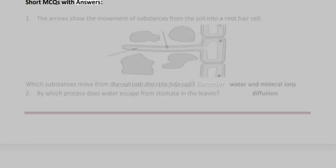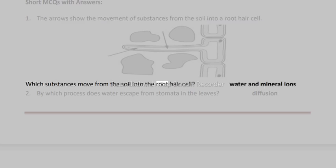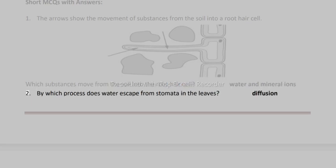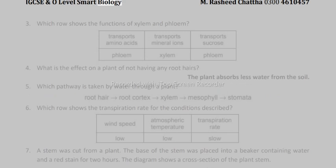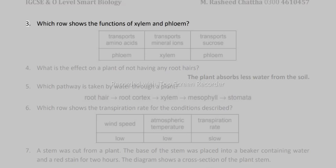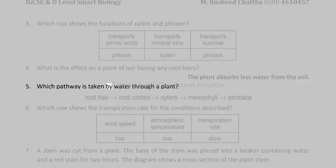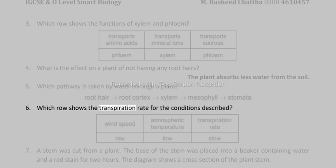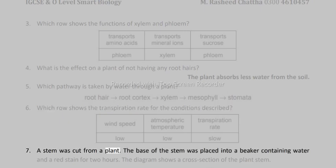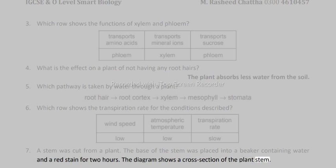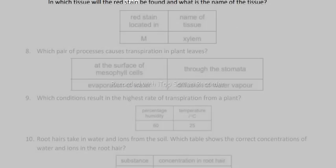Short MCQs with answers. 1. The arrows show the movement of substances from the soil into a root hair cell. Which substances move from the soil into the root hair cell? Water and mineral ions. 2. By which process does water escape from stomata in the leaves? Diffusion. 3. Which row shows the functions of xylem and phloem? 4. What is the effect on a plant of not having any root hairs? The plant absorbs less water from the soil. 5. Which pathway is taken by water through a plant? 6. Which row shows the transpiration rate for the conditions described? 7. A stem was cut from a plant. The base of the stem was placed into a beaker containing water and a red stain for 2 hours. The diagram shows a cross-section of the plant stem. In which tissue will the red stain be found and what is the name of the tissue?